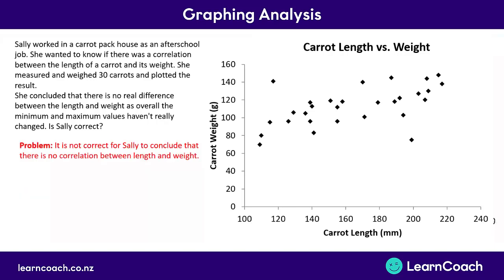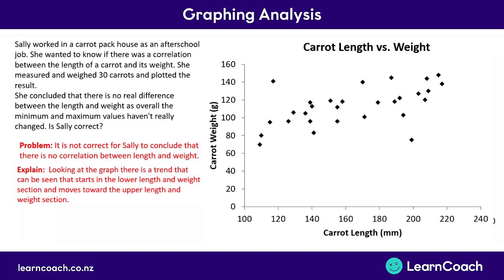First of all, we're likely going to have to identify a problem. When you read data in a question, know that there's often going to be mistakes, and they've given you these mistakes on purpose. In this case, we can see that there is a general trend. It's not really correct for Sally to conclude there's no correlation between length and weight, because as the length increases, the trend goes upwards — the weight increases as well. Looking at the graph, there is a trend starting at lengths around 100mm and weight around 50–60g, moving up to lengths around 220mm and weight around 140g. This shows a general upwards trend.